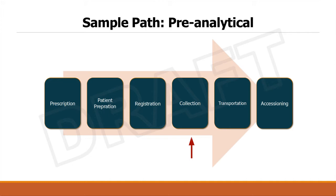Collection can happen either in the OPD or in the IPD, or in collection centers, or maybe samples coming from other laboratories, all of which need to be transported to the lab. That is the next phase which is transportation, and then accessioning or the receiving of samples within a lab.